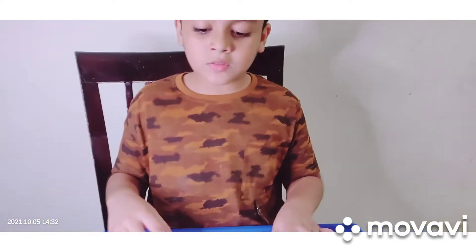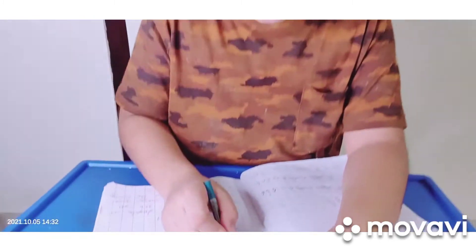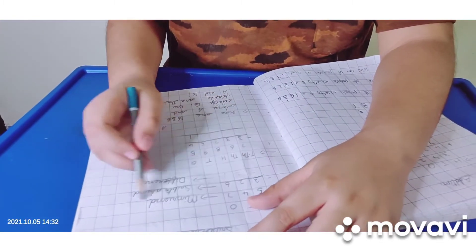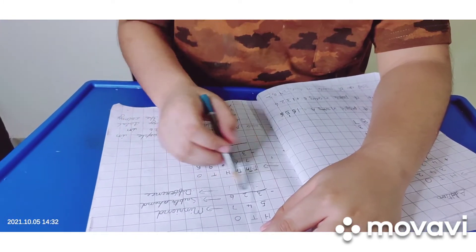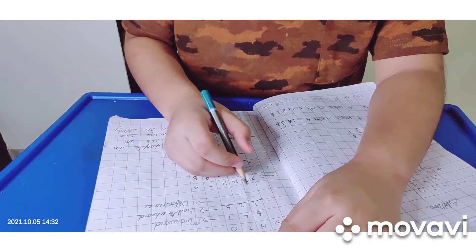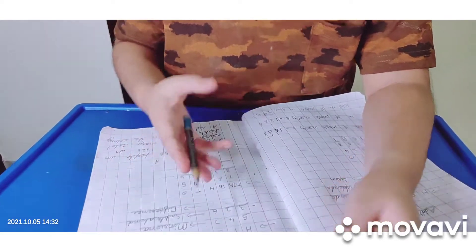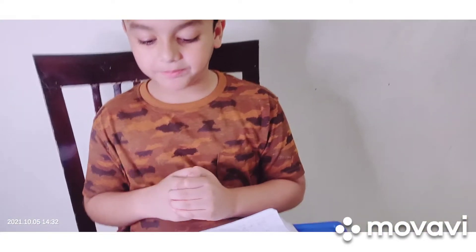And now we are going to do subtraction. In subtraction, this number is called the minuend and this one is called the subtrahend, and the answer is called the difference. Let us solve this problem. 7 minus 6.